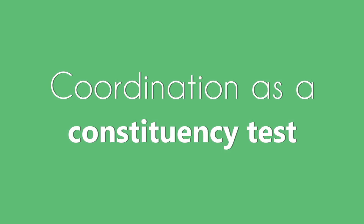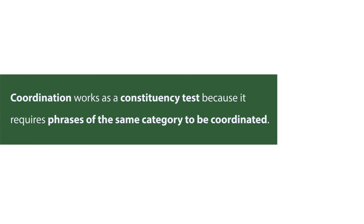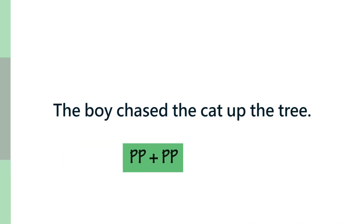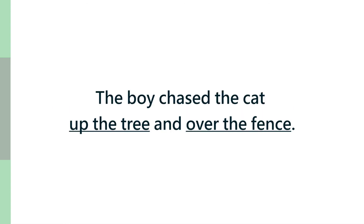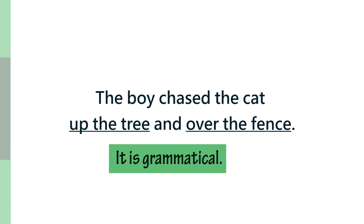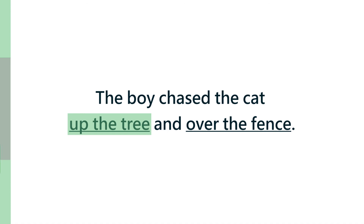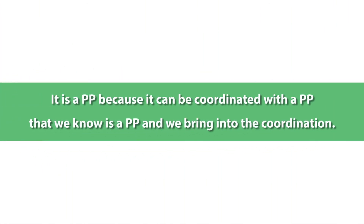Coordination works as a constituency test because it requires phrases of the same category to combine. For example, in 'The boy chased the cat up the tree,' if you want to know if 'up the tree' is a constituent, you identify it as a prepositional phrase and try adding another prepositional phrase: 'The boy chased the cat up the tree and over the fence.' Because you can successfully coordinate 'over the fence' with 'up the tree,' it means 'up the tree' is also a prepositional phrase and is a constituent — it passes the coordination test.